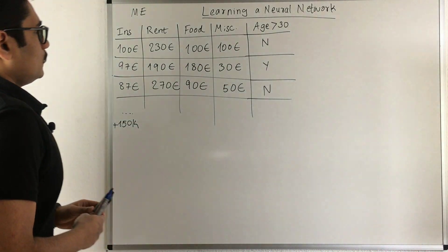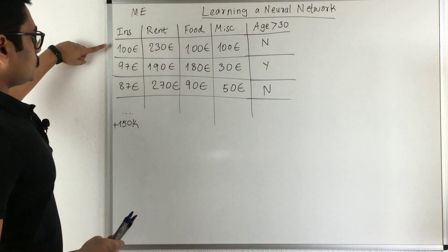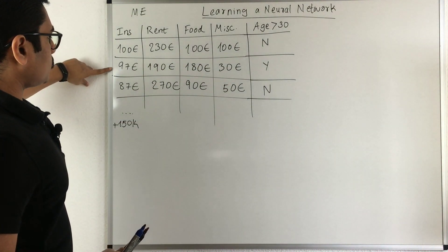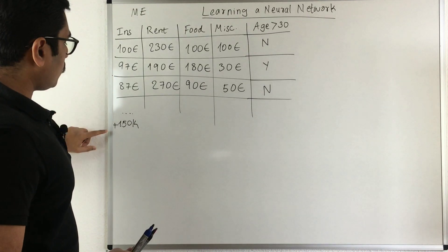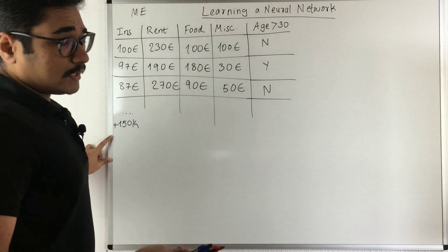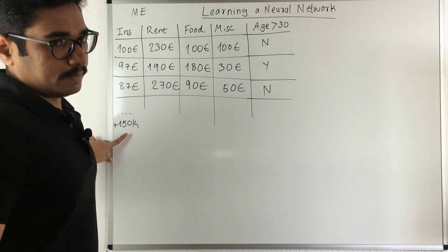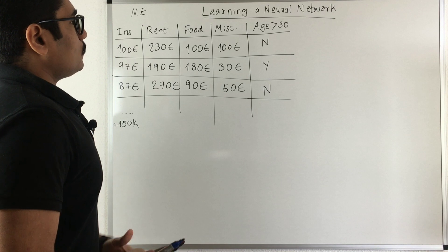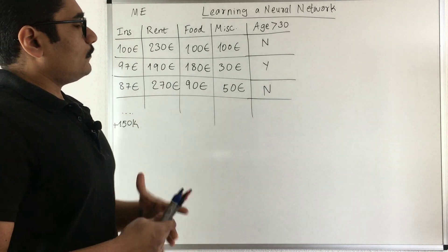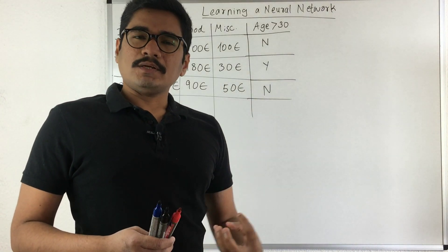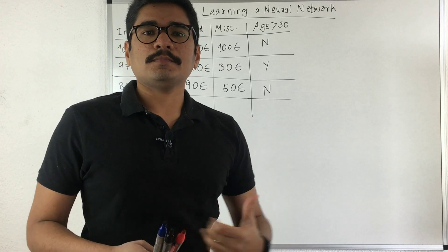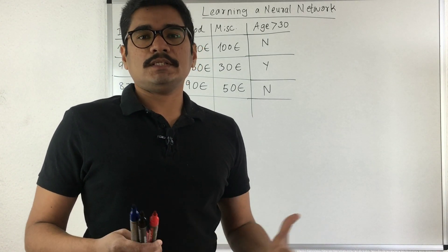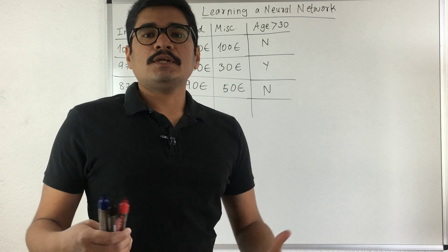This is for one student, second student, third student, and say you have many such records. I have taken 150k - that is 150,000 records for this. Now say if you ask whether we really require a neural network for computing this kind of activity, well I say no.